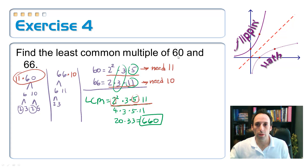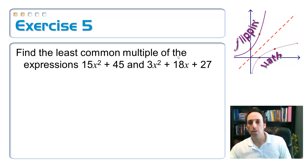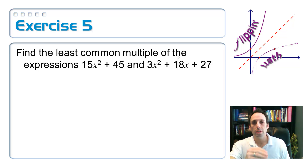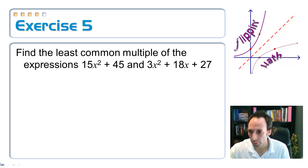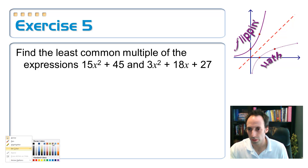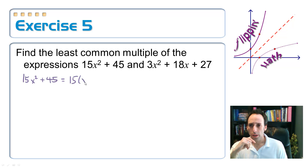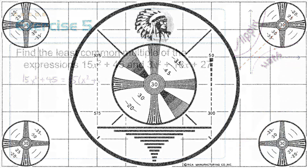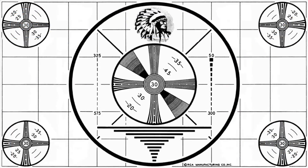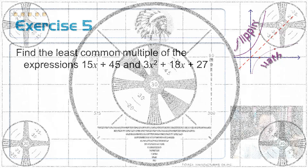Now let's try this with some algebra. We want to find the least common multiple of two algebraic expressions. The first thing I need to do is factor each one of them. I think there's a typo in the original — let me fix this. Okay, exercise five.